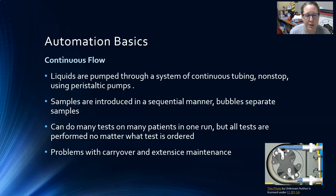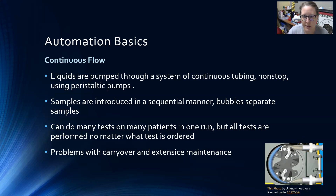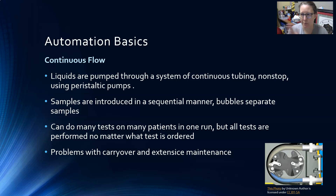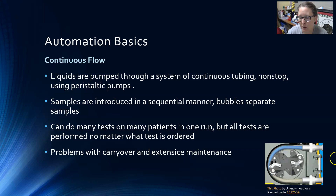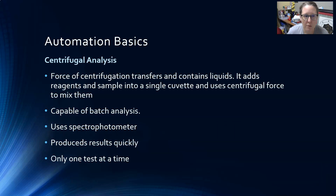For continuous flow analysis, liquids are pumped through a system of continuous tubing non-stop using peristaltic pumps. This illustration shows a peristaltic pump at work — samples are introduced in a sequential manner and bubbles separate the samples. You can do many tests on many patients in one run, but all the tests the machine performs are run regardless of what test is ordered — it doesn't have the capacity to single out individual tests. There are also problems with carryover and extensive maintenance, as substances from one specimen can stick to the tubing and contaminate the next sample.